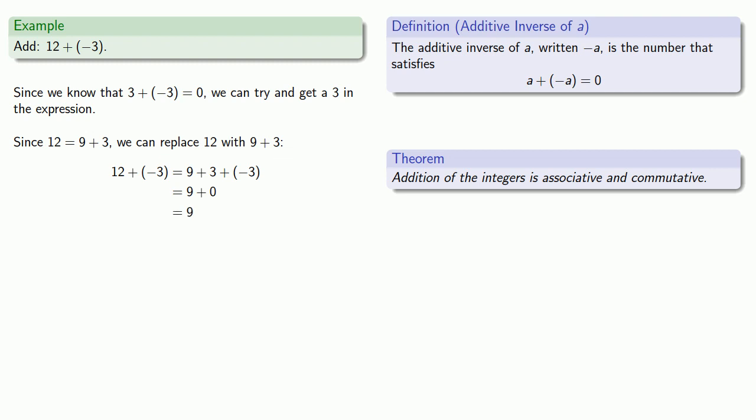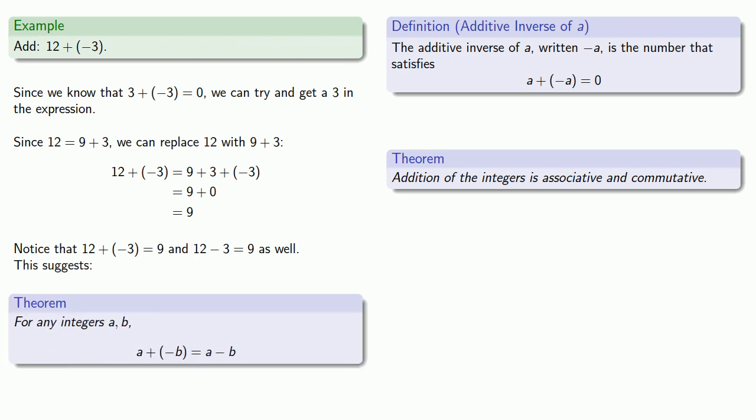We might make a quick note: 12 plus the additive inverse of 3 is equal to 9. Meanwhile the same numbers 12, 3 and 9 are related by 12 minus 3 is equal to 9. This suggests that for any integers a and b, a plus the additive inverse of b is equal to a minus b.